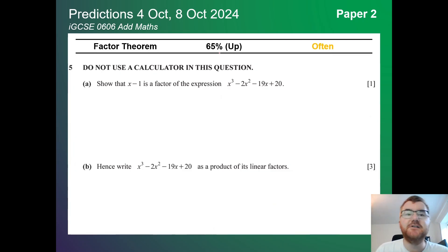Right on to paper 2. Factor theorem has crept in here at 65%. Notice over the two papers you really need to be able to do the factor theorem. It's a case of it could appear on paper 1 or appear on paper 2, but it'll probably appear in one or the other.